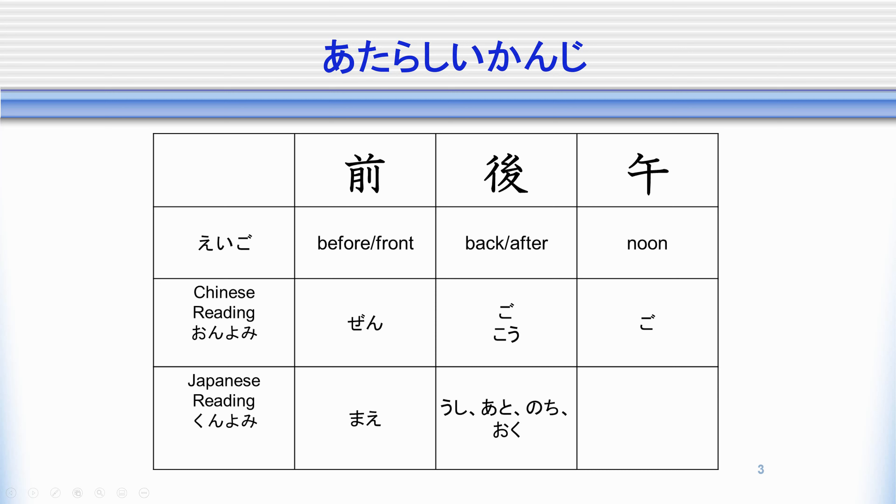The first kanji we are going to look at when we're talking about it as a directional word, we read it as mae. It also has another reading, zen. This zen is one that we see when we see a Chinese reading, usually because it is a part of another word. This reading zen is one that we will see together with another kanji for gozen, which we know means AM, right? So the zen here, like the idea is before noon, gozen.